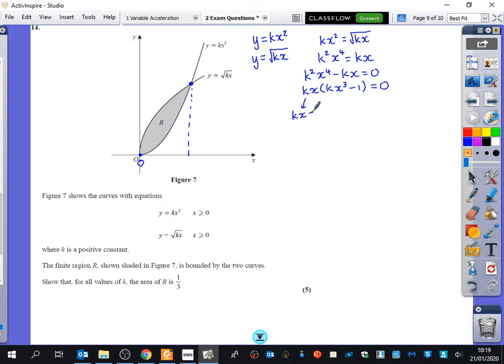So, this tells me two things. Either kx is equal to 0, in other words, x is equal to 0. Why am I happy that x is equal to 0? Because you can see they cross at 0. So, that's a solution that I wanted to see coming out. And this tells me that the other bit is either kx cubed minus 1 equals 0, which says that kx cubed is equal to 1, or x cubed is equal to 1 over k. So, x is the cubed root of 1 over k.